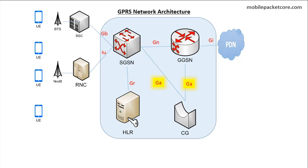The GA interface is the interface between the GSNs and the CG. The GSNs use the GA interface to send the CDRs to the CG in order for the CG to start charging the users. The GI interface is the interface between the GGSN and the PDN.